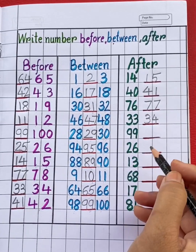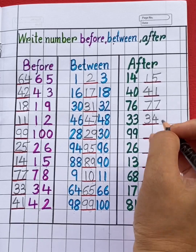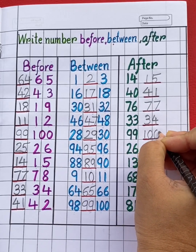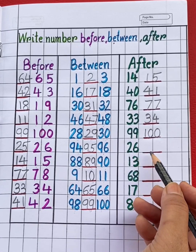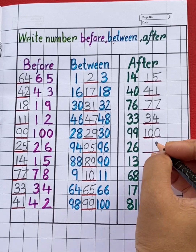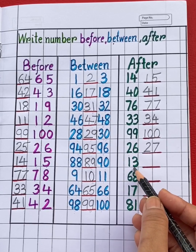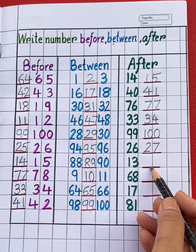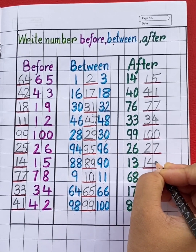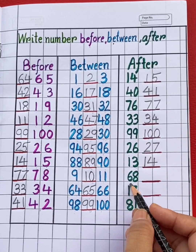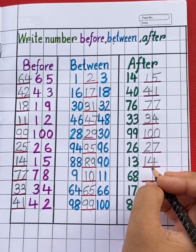Next number is 99. Which number will come after 99? Number 100. Next number is 26. Which number will come after 26? Number 27. Next is number 13. Which number will come after 13? Number 14. Next number is 68. Which number will come after 68? Number 69.